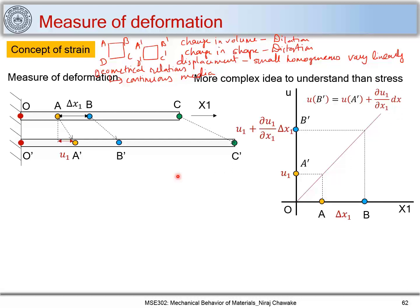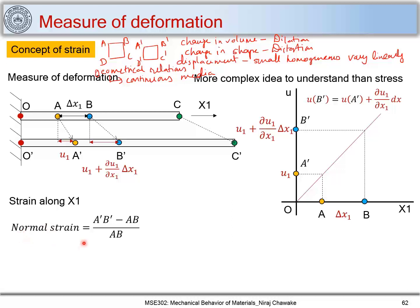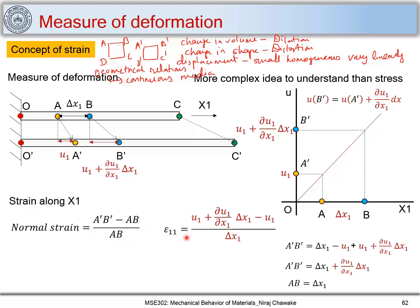Now let us come back and define strain. The distance B to B dash is U1 plus del U1 upon del X1 times delta X1. I define normal strain epsilon 11 as A dash B dash minus AB upon AB — that is, final length minus original length upon original length. B dash minus A dash gives the change in length delta L, and AB equals delta X1, which is the original length.